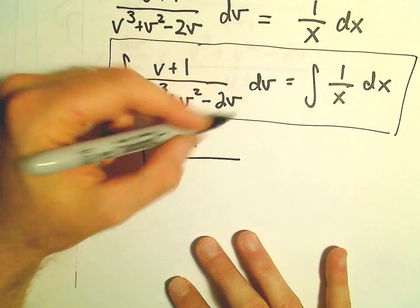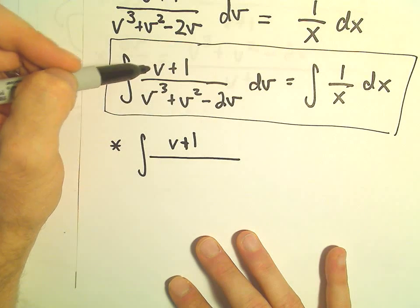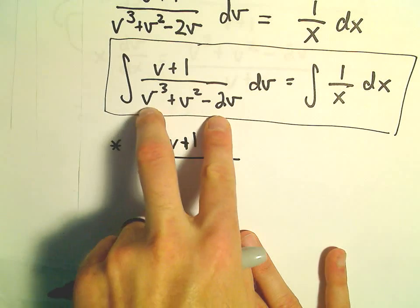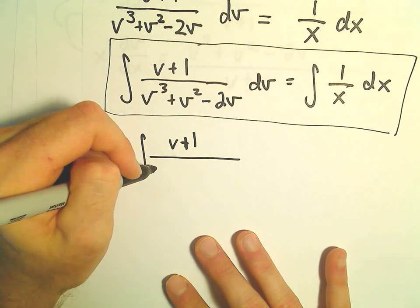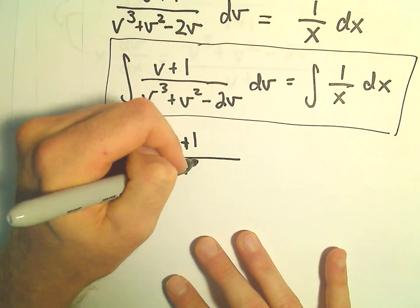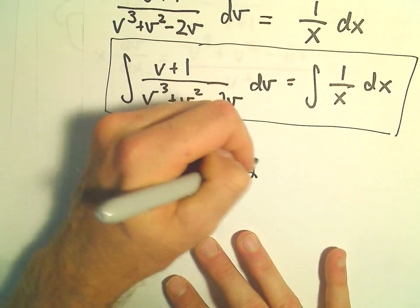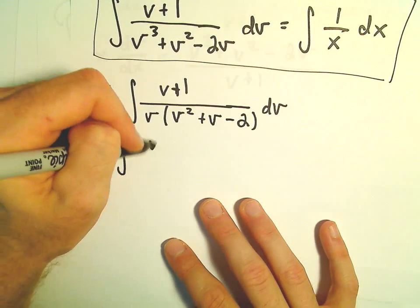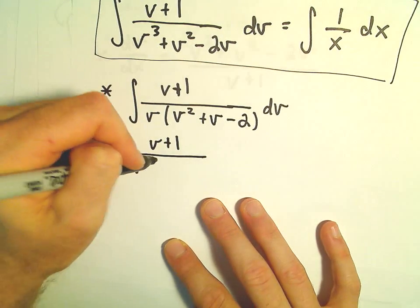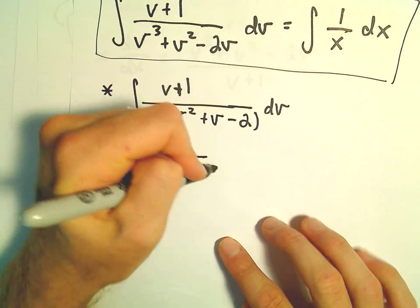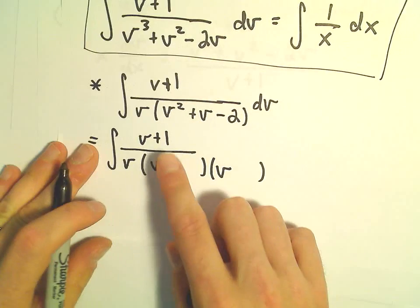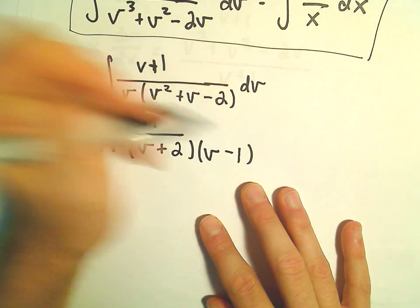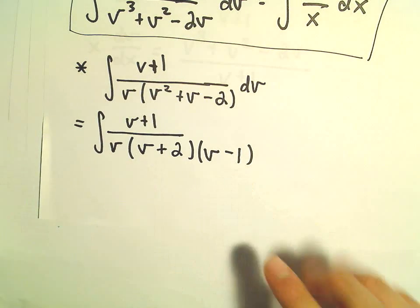I recognize this as a rational function — a polynomial in v over a polynomial in v — so we should be able to use partial fractions. Factoring the denominator gives v(v² + v - 2), and the quadratic factors further as v(v + 2)(v - 1).